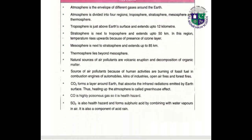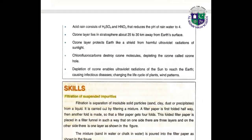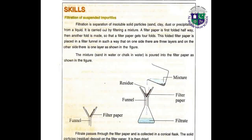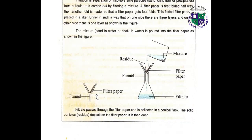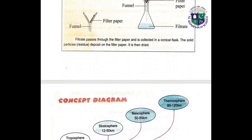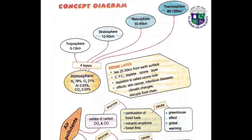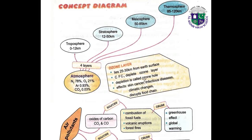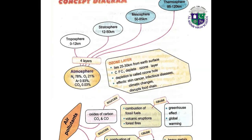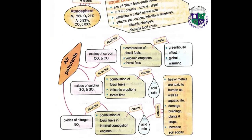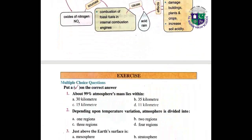Next, students, we have the key points of the whole unit. Here we have the concept diagram showing the atmosphere, its layers, air pollutants, and their types as shown in this flow diagram.